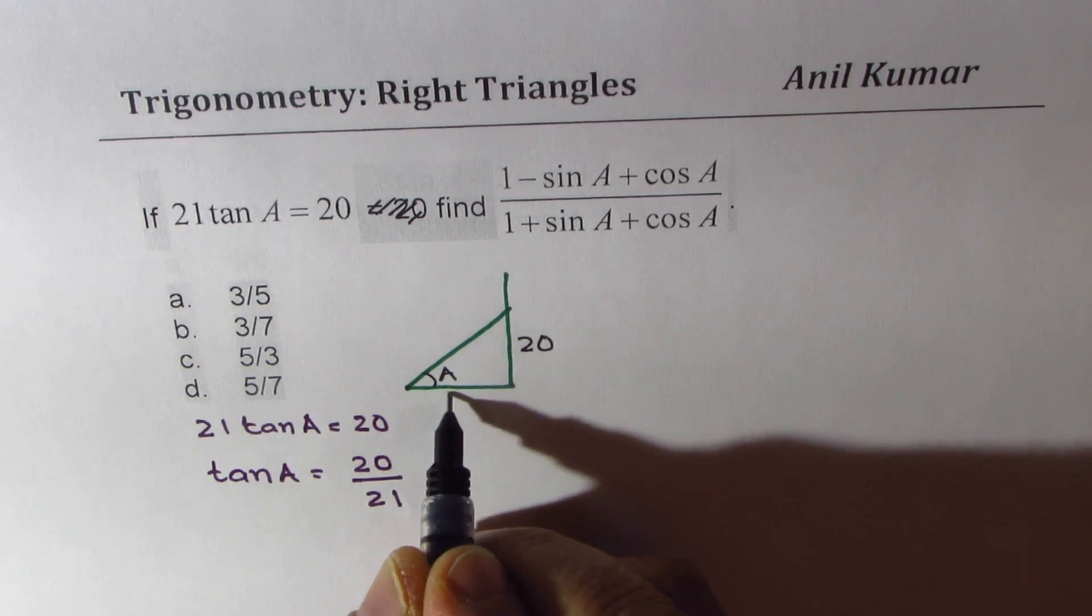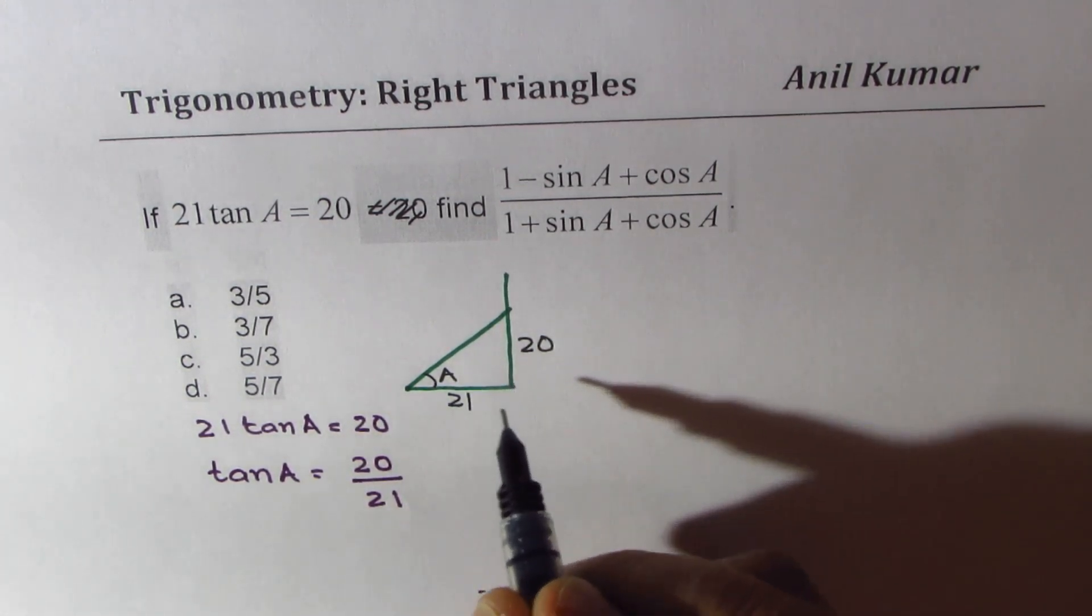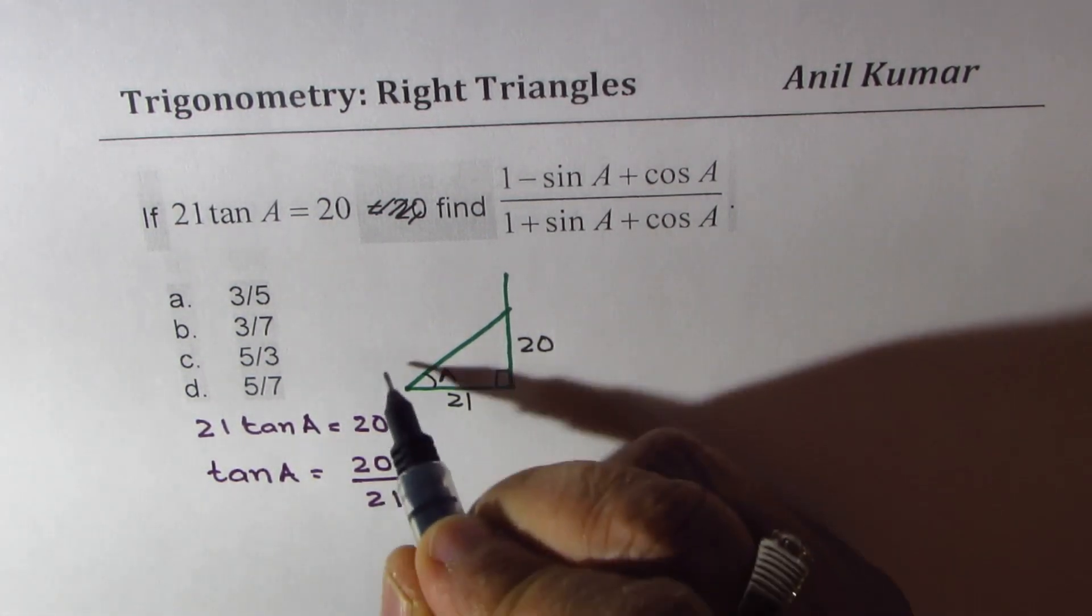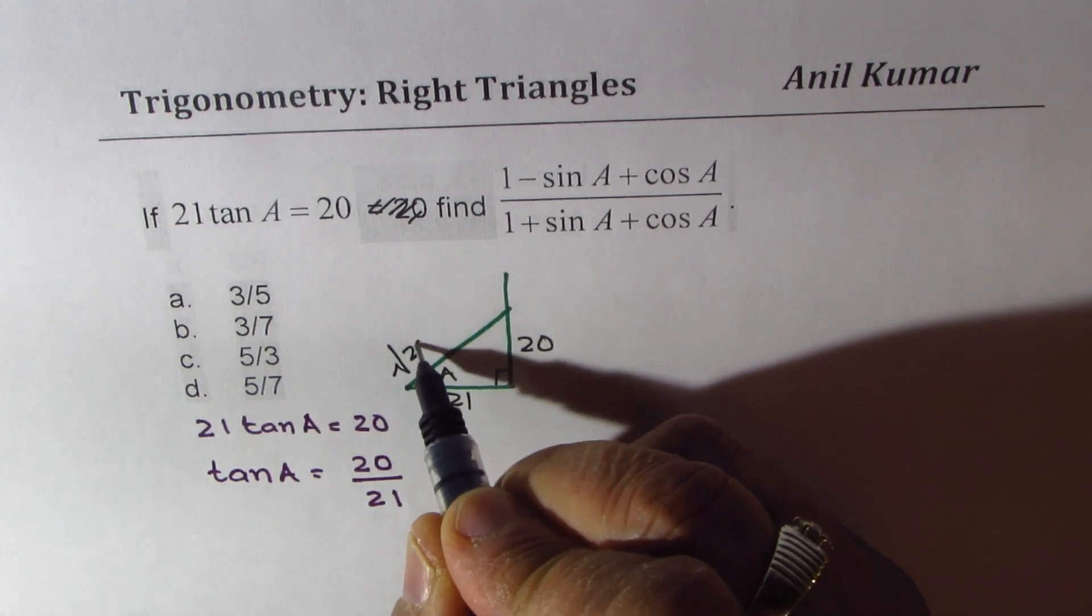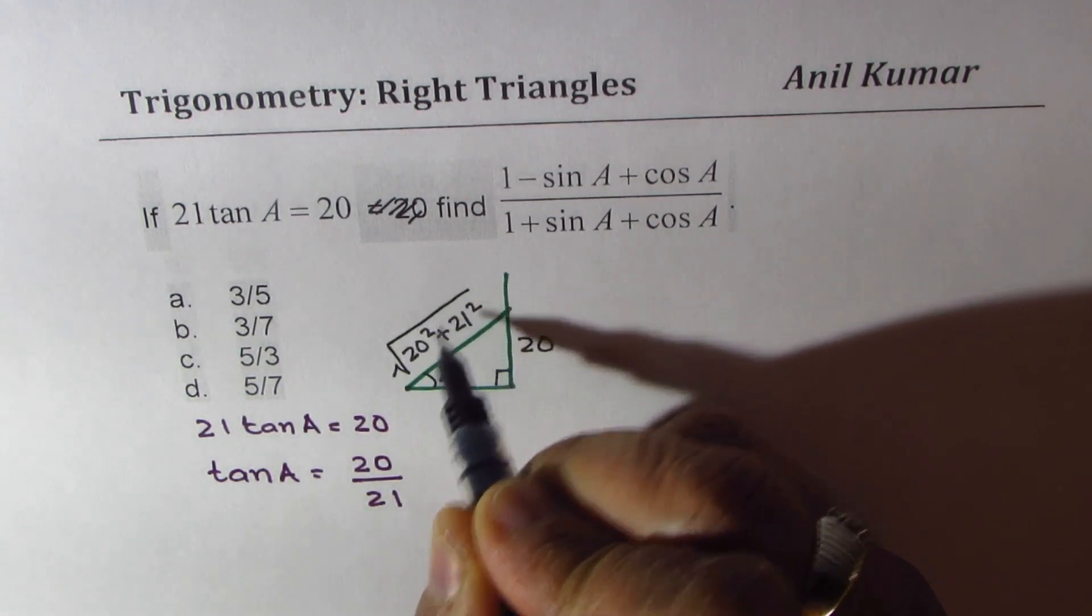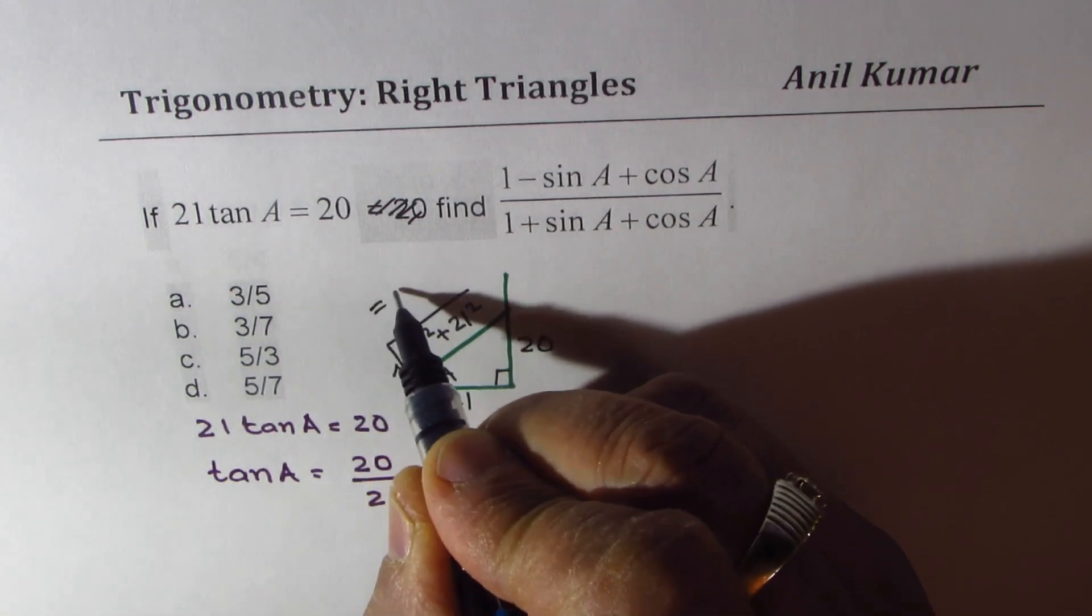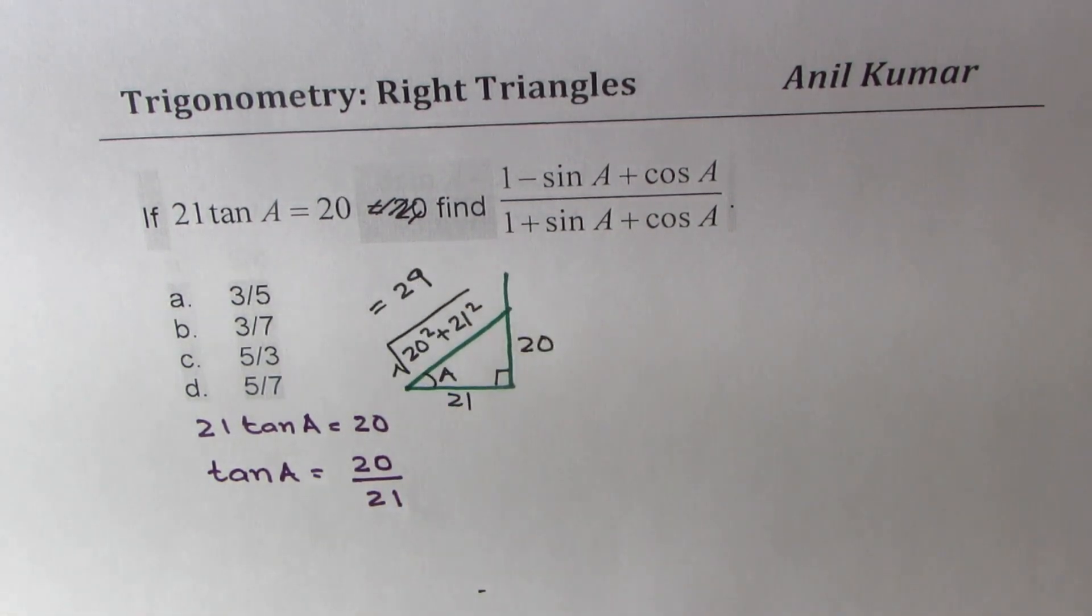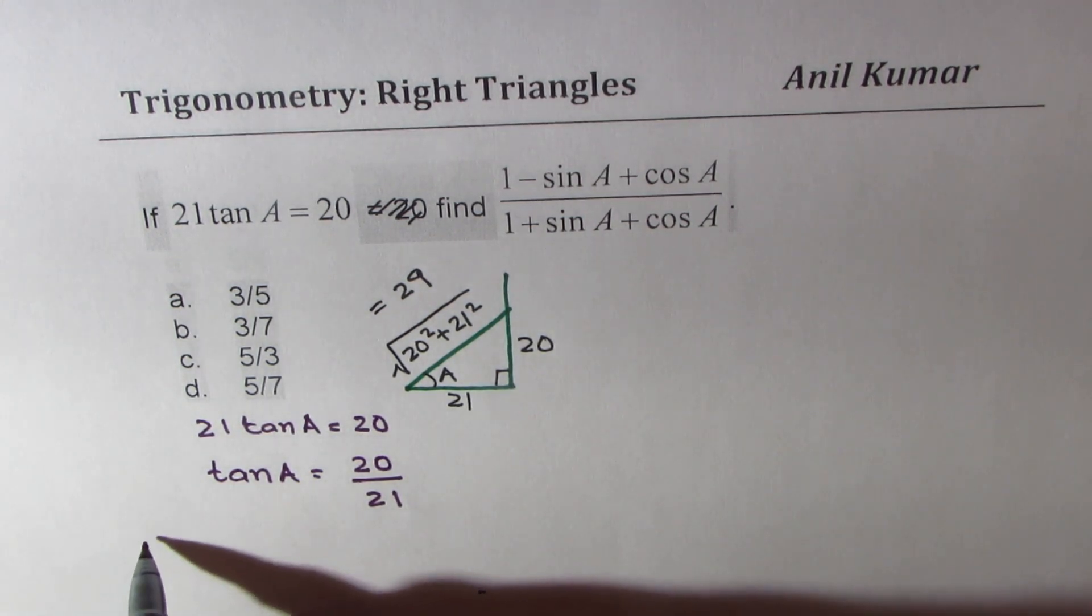The hypotenuse should be square root of 20 square plus 21 square. Now this value is equal to 29. So when you go for such tests, you should know some Pythagorean triples. I'll advise you to check on Pythagorean triples.